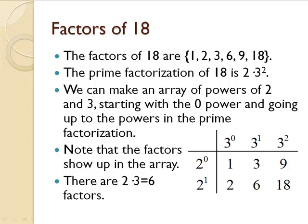The factors of 18 are 1, 2, 3, 6, 9, and 18. Its prime factorization is 2 times 3 squared. Since it has two different prime numbers as factors 2 and 3, we can make an array of powers of 2 and 3 starting with the zero power and going up to the power that's found in the prime factorization. So 2 goes to the first power and 3 goes to the second power.